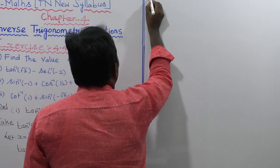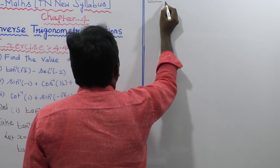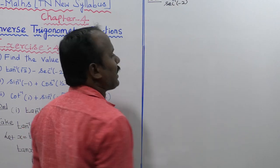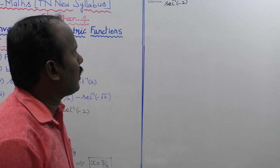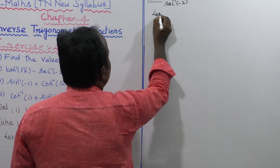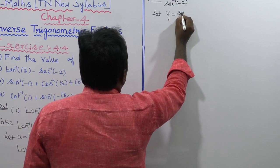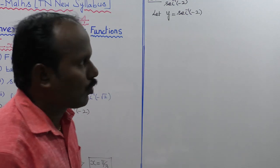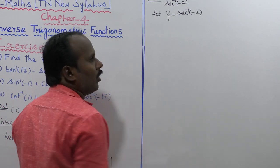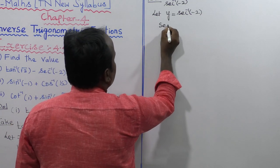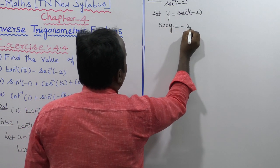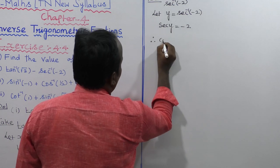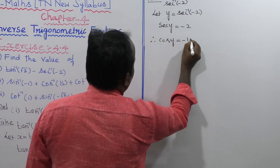Next, let us take the second term of the given equation. The second term is secant inverse of minus 2. Let y be equal to secant inverse of minus 2. Moving secant to the right side, then secant y is equal to minus 2.